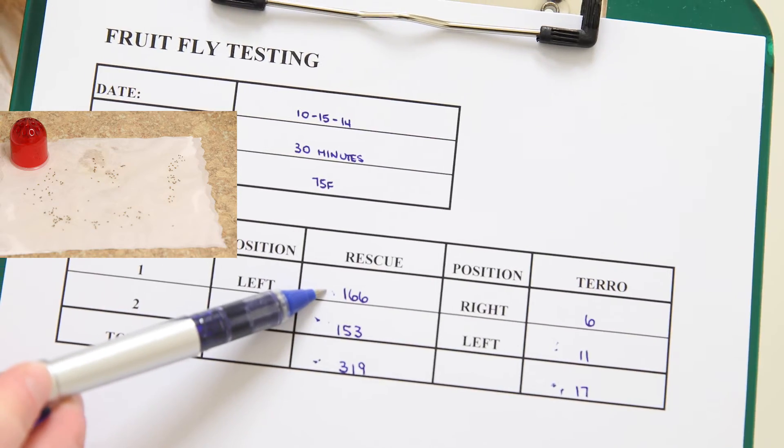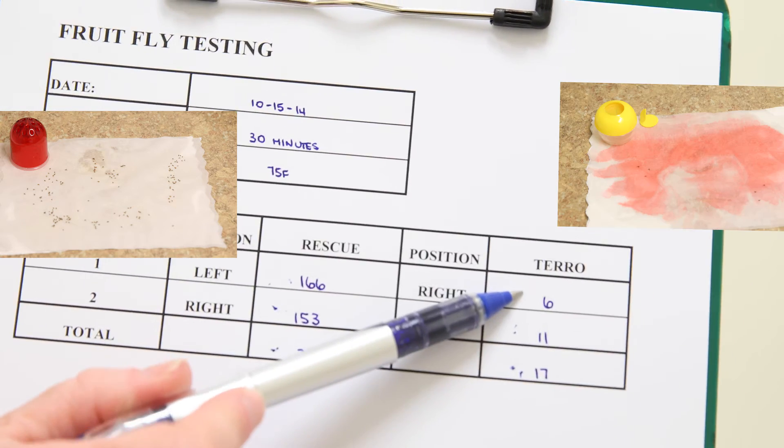After 30 minutes of testing, the RESCU trap caught 166 fruit flies, while the Taro trap caught 6 fruit flies.